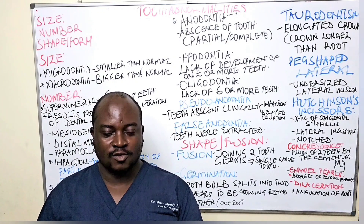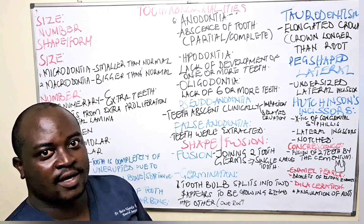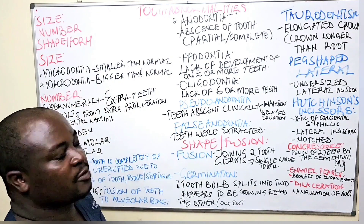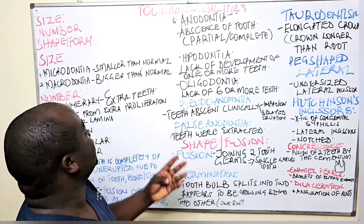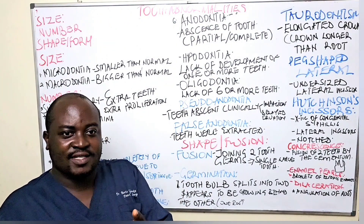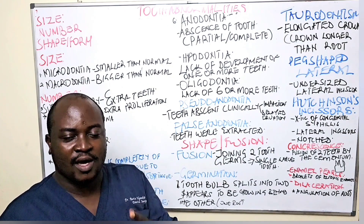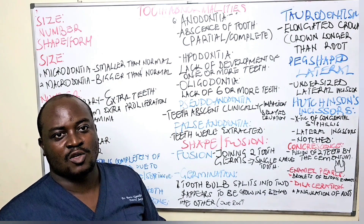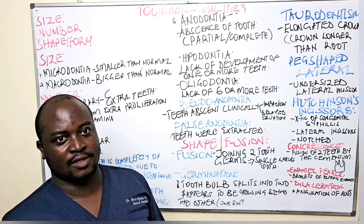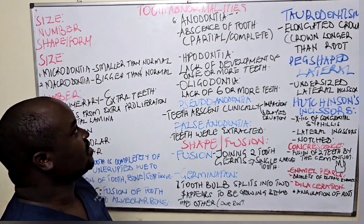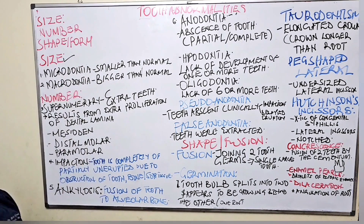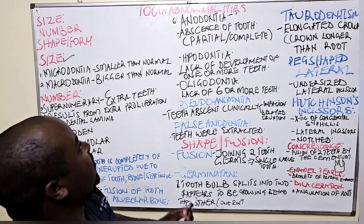Good evening, good morning, good afternoon. In this video we are going to talk about tooth abnormalities. These are irregularities we find in teeth. We talked about the characteristics of each tooth, but we may find it is not what we are getting in a patient on physical examination. We are learning different abnormalities that can be found in different individuals — these can be in terms of size, number, or shape.